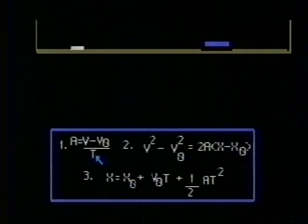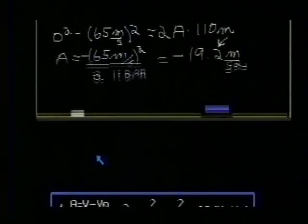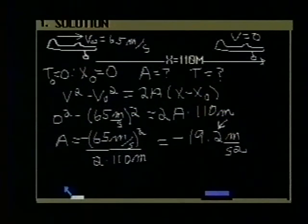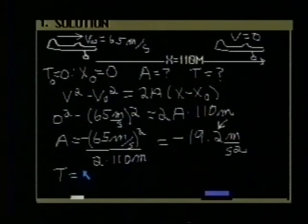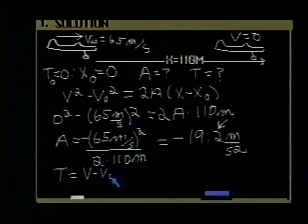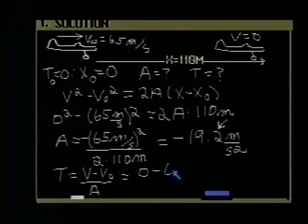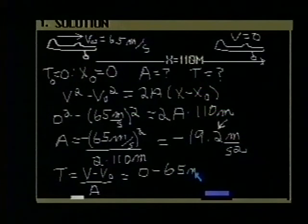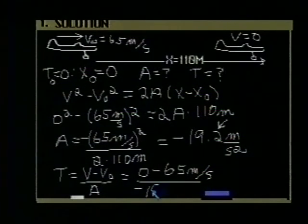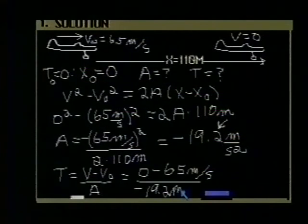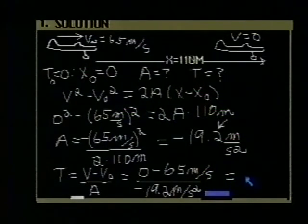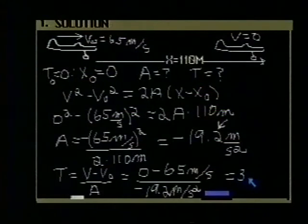If I rewrite that equation for the time, I write that the time is equal to final minus initial velocity divided by the acceleration. This is equal to the final velocity, zero, minus the initial 65 meters per second. We divide this by the acceleration minus 19.2 meters per second per second. Now, giving us an answer here, if you calculate that, 3.38 seconds.